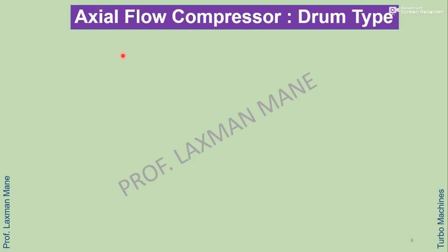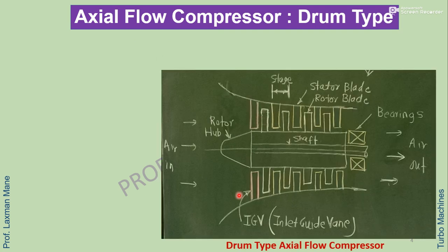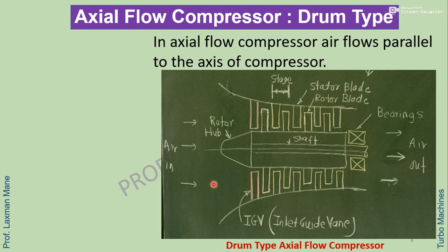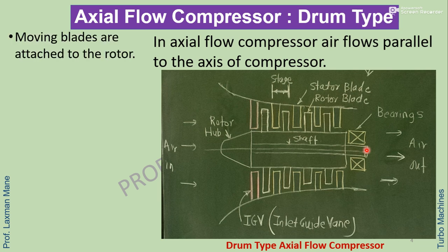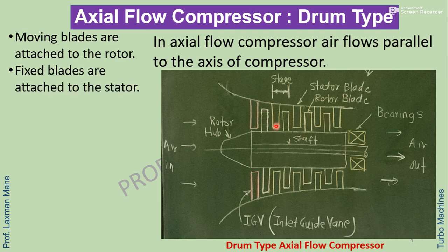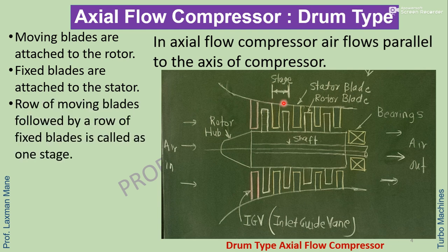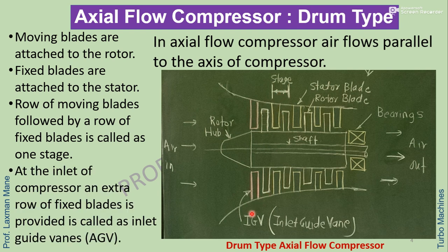Let us discuss the Axial Flow Compressor. Here is a construction of a drum type Axial Flow Compressor. In an Axial Flow Compressor, air flows parallel to the axis of the compressor. Moving blades are attached to the rotor, and fixed blades are attached to the stator. A row of moving blades followed by a row of fixed blades is called one stage. At the inlet of the compressor, an extra row of fixed blades is provided, called the Inlet Guide Vane, i.e., IGV.